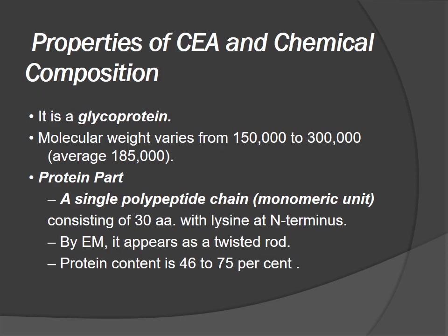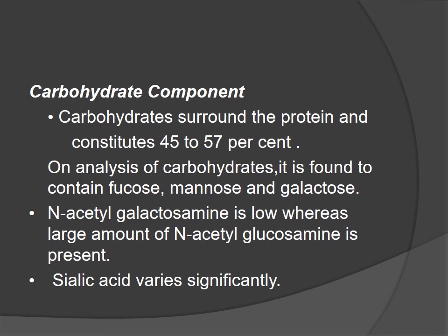Properties and chemical composition of CEA: it is a glycoprotein with molecular weight ranging from 150,000 to 300,000, averaging about 185,000. The protein part is a single polypeptide chain consisting of 30 amino acids with lysine at the N-terminus. By electron microscopy it appears as a twisted rod. Protein content is 46 to 75%. Carbohydrates surround the protein, constituting 45 to 57%, and contain fucose, mannose, and galactose. N-acetyl galactosamine is low, while N-acetyl glucosamine is present in large amounts. Sialic acid varies in significance.